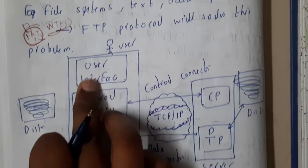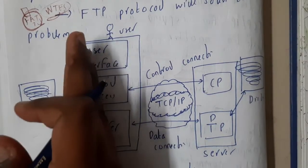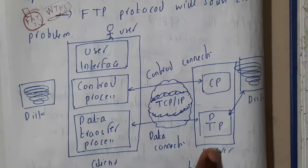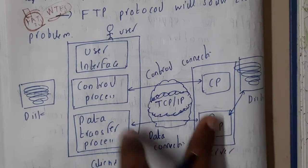Assume that this is your storage disk and here is the user. He is having user interface, control processor, and data transfer process. He is communicating with our server. Server will be having the control processor and data transfer processor.